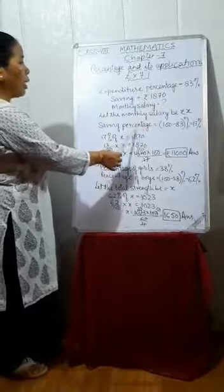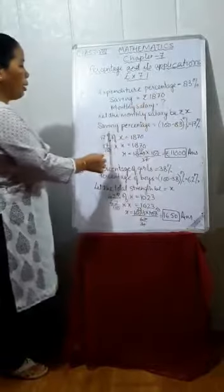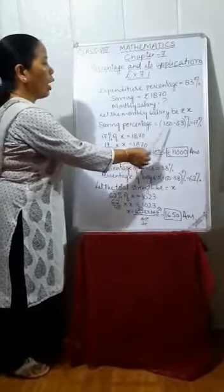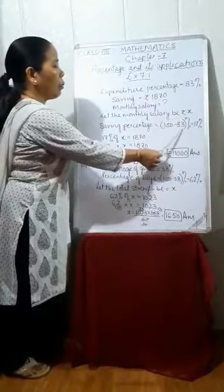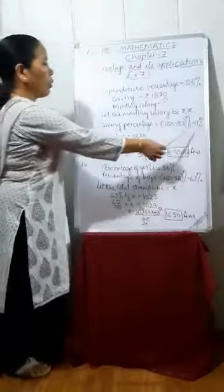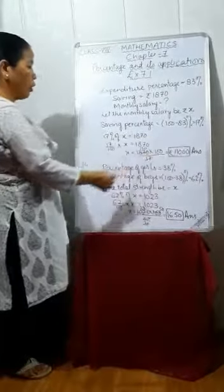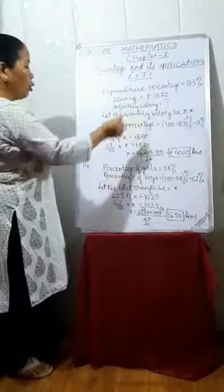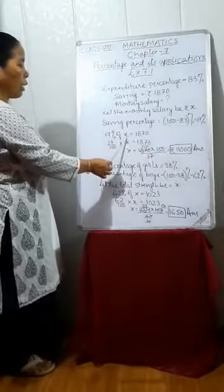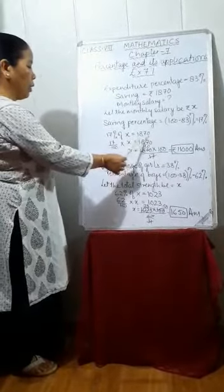Saving percentage — as we know that expenditure percentage is 83% — therefore saving percentage will be equal to 100 minus 83%, which equals 17%. It means 17% is the saving percentage. And we are given the saving, so 17% of monthly salary, that is X, equals 1870.